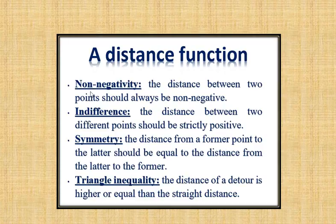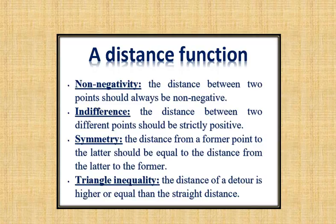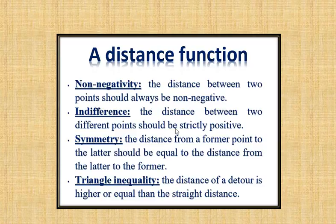This distance function must have some very important properties. For example, it cannot be negative — the distance between two points cannot be negative. The distance between two points can be zero, but it cannot be negative; that would not make intuitive sense. Also, if you have two distinct points in the space, the distance between those two points must be strictly positive.